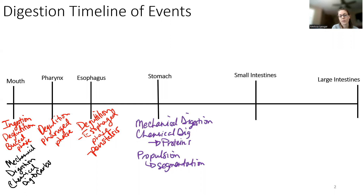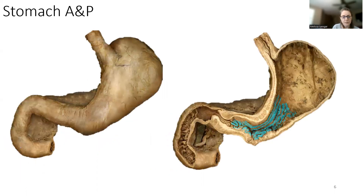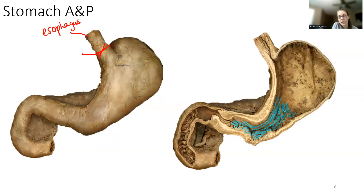Let's look at the stomach anatomy, and then we'll talk about all the different functions it does. The stomach is located on the left side of the abdomen, underneath the diaphragm and underneath the liver. It's going to meet up with the esophagus at the cardiac sphincter, and it's going to attach to the duodenum — which is the first part of the small intestine — at the pyloric sphincter.